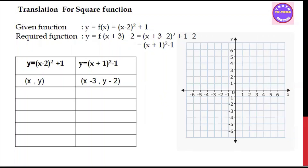For students who are following this lesson, please join and let us know in the comments. Now, we want to look at translation. The given function is y = (x − h)² + k. So the function we want to look at is y = (x − 2)² + 1.